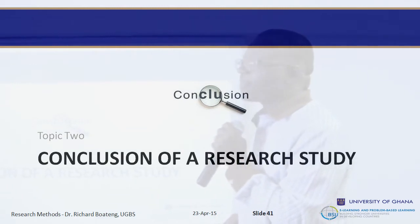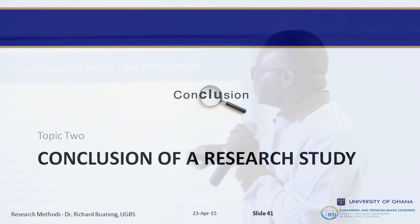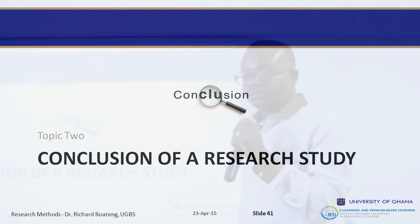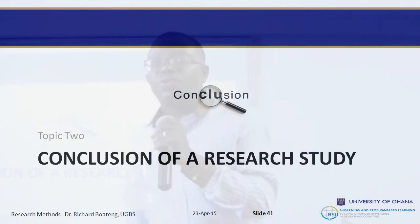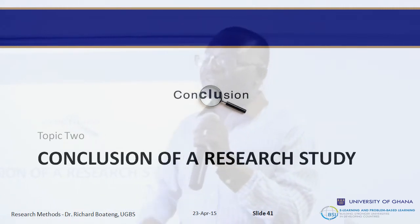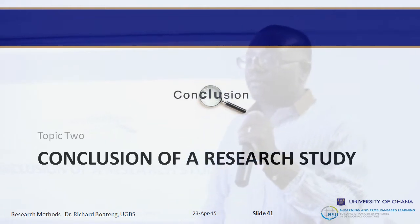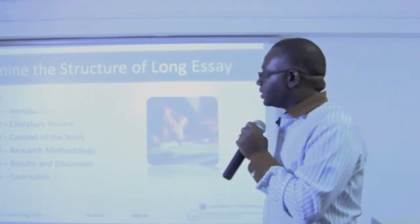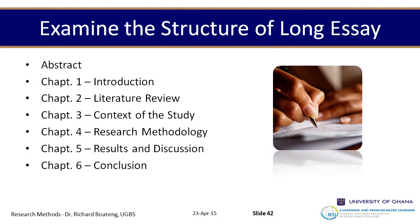That was about the research proposal. Now, whenever anybody finishes a long essay, he needs to write a conclusion. Conclusion is something very daunting for a lot of students — they don't know where to begin from and they are in a hurry to finish. I advise that your conclusion should be between 1,500 to 2,000 words — very brief and straight to the point. It can have about three components. The structure of your work is: introduction, literature review, context of study, research methodology, results and discussion, and conclusion.